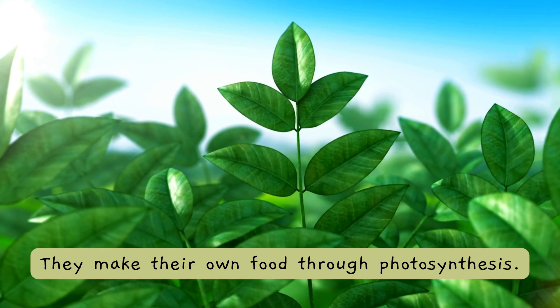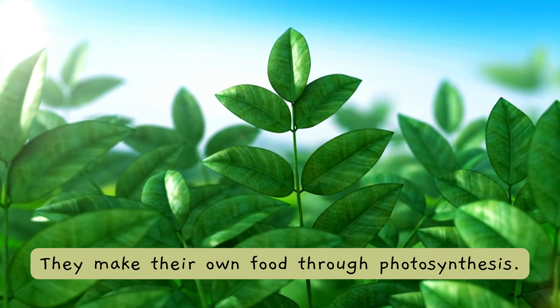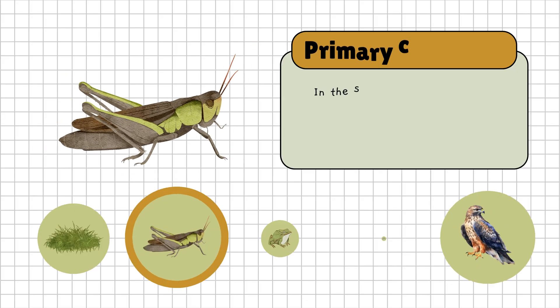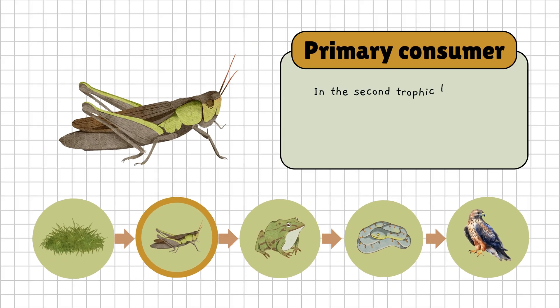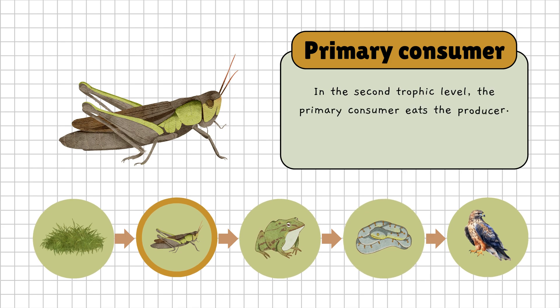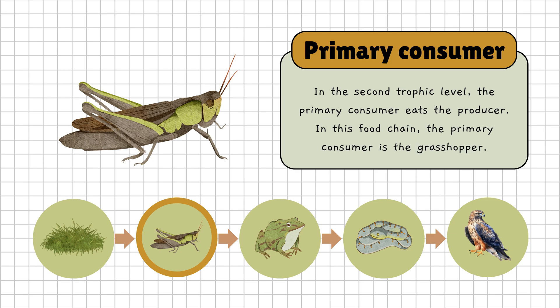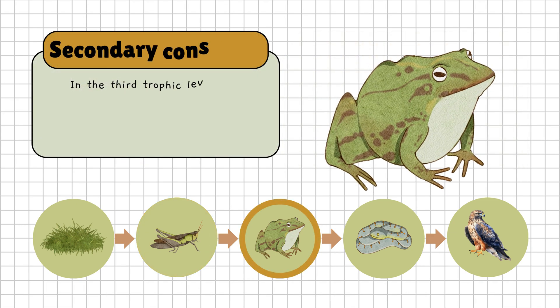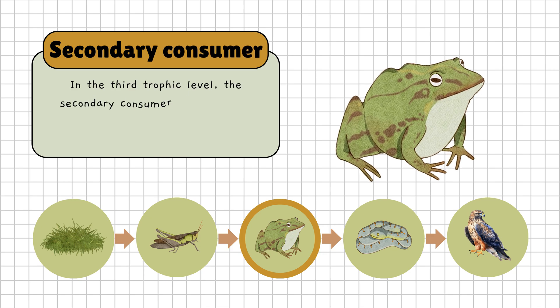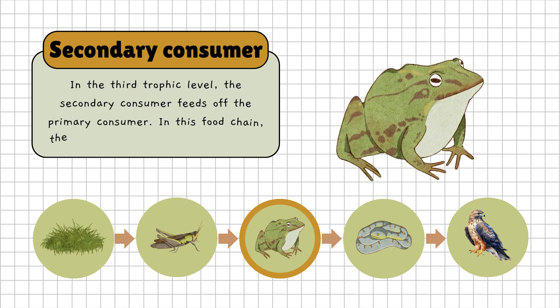Imagine this food chain: the grass is our producer. Next up, we have the primary consumer, which is at the second trophic level. These are animals that eat the producers. In our example, a grasshopper munches on the grass. Moving up, we reach the secondary consumer, which eats the primary consumer. In this case, a frog eats the grasshopper.